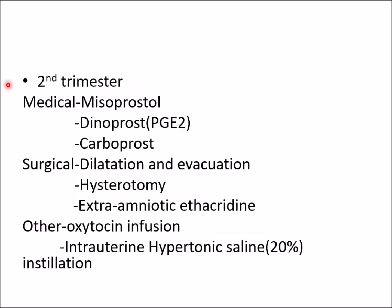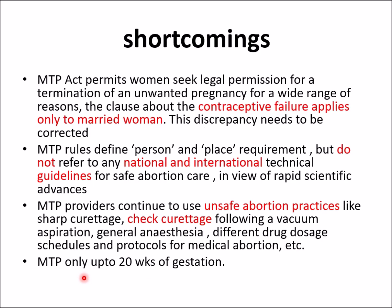For the second trimester, medical termination can be done using misoprostol, dinoprostone, or carboprost. Surgical methods include dilation and evacuation, hysterotomy, or extra-amniotic instillation. Other methods include oxytocin infusion or intrauterine hypertonic saline (20% saline) installation.